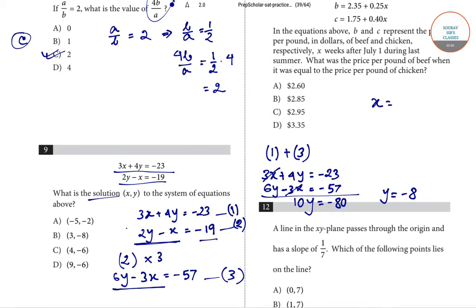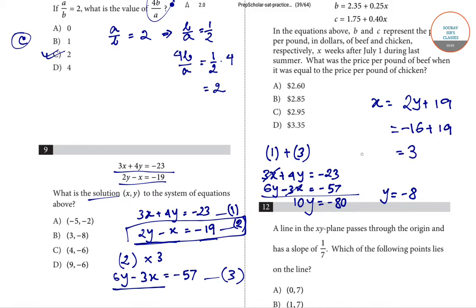Substituting y = -8 into equation 2: x = 2y + 19 = 2(-8) + 19 = -16 + 19 = 3. So the solution is x = 3, y = -8, giving us the point (3, -8). Option B is correct for question number 9.